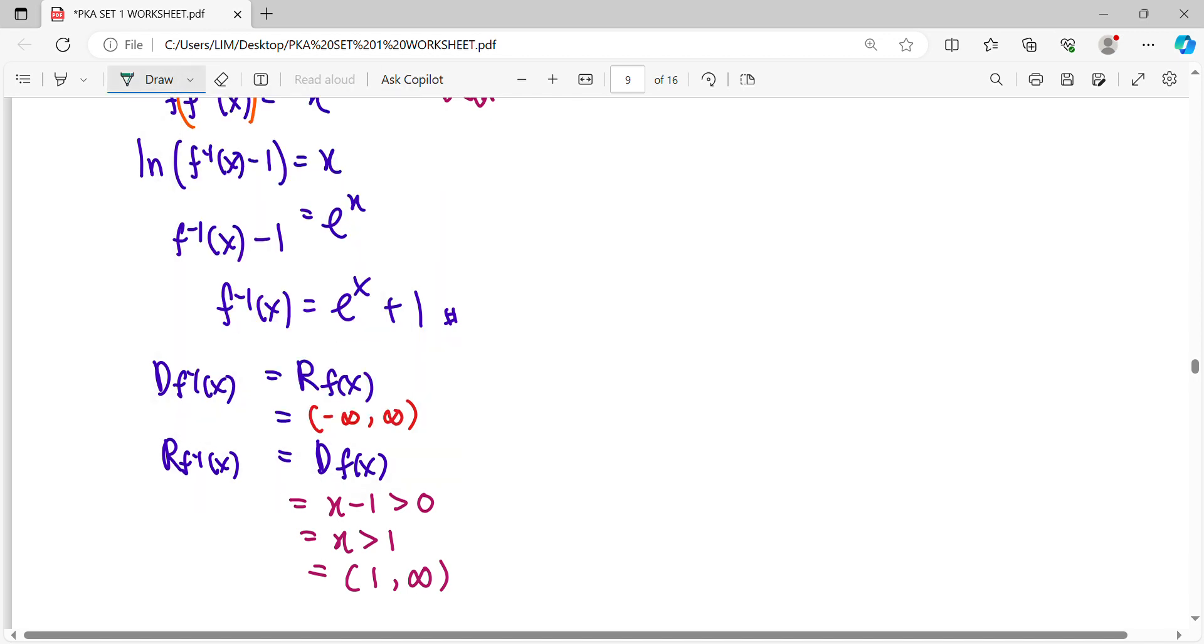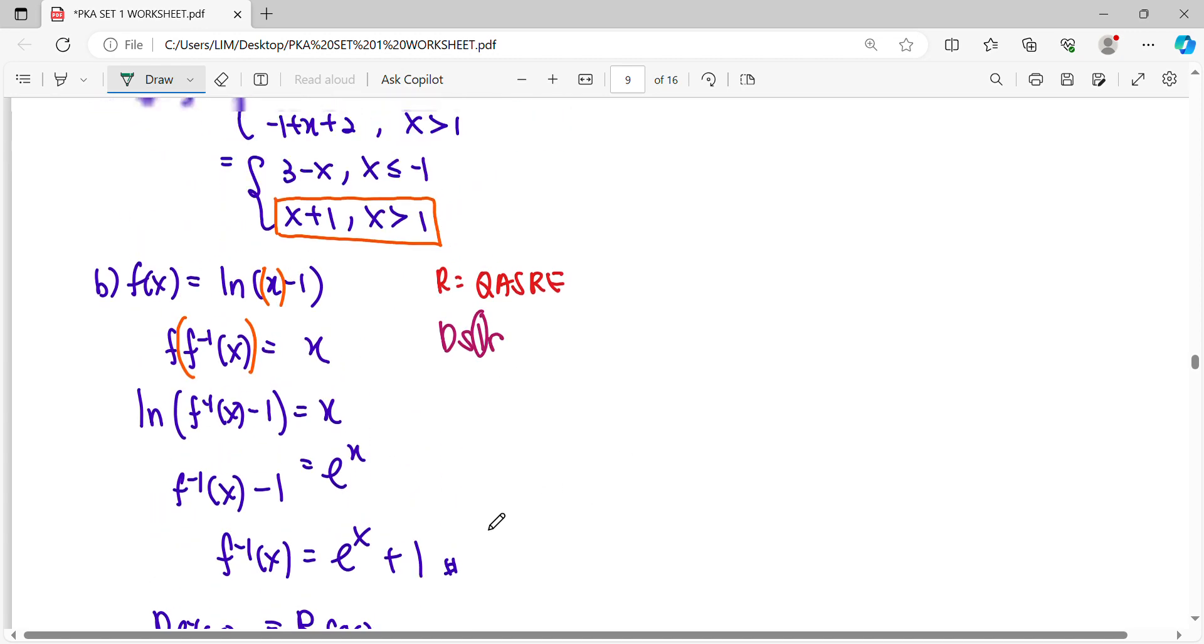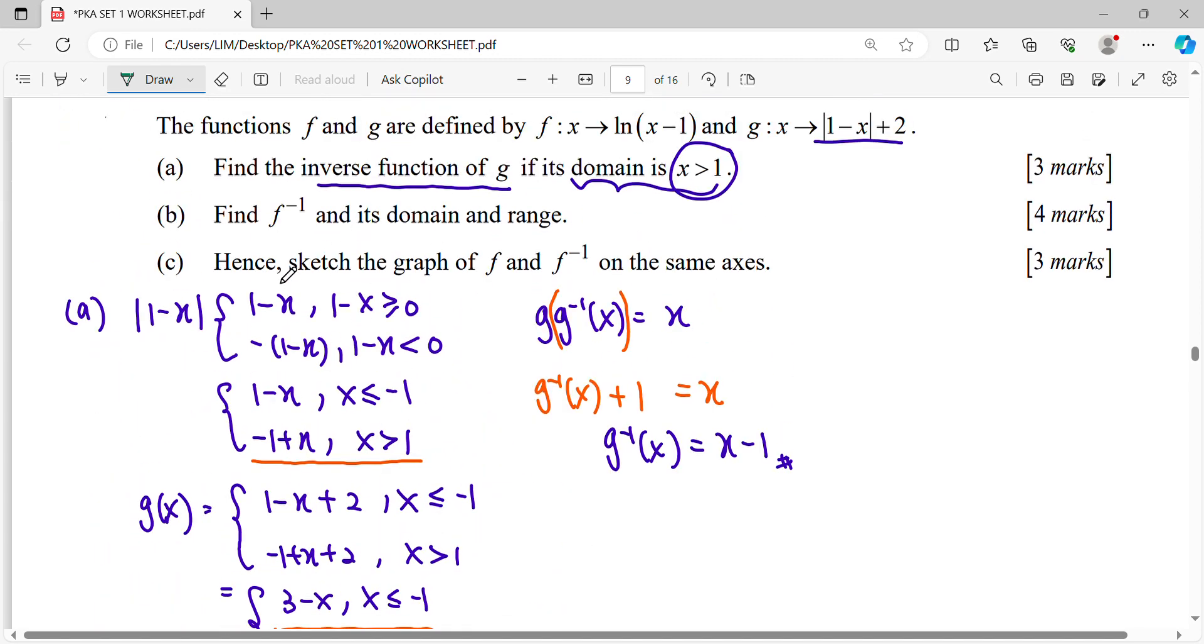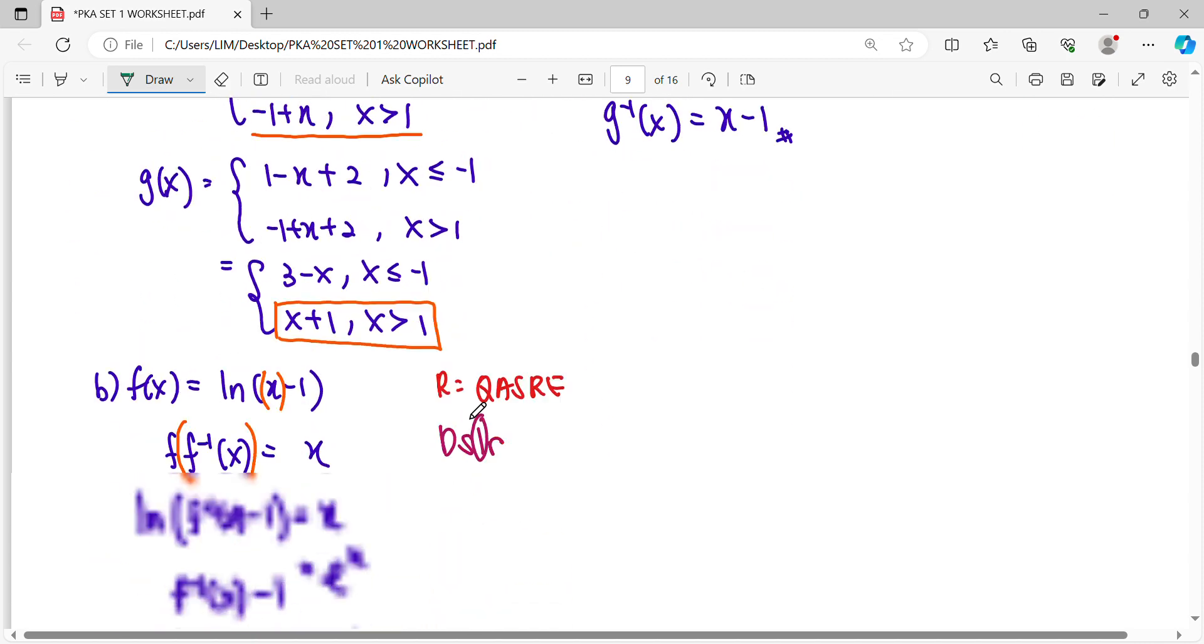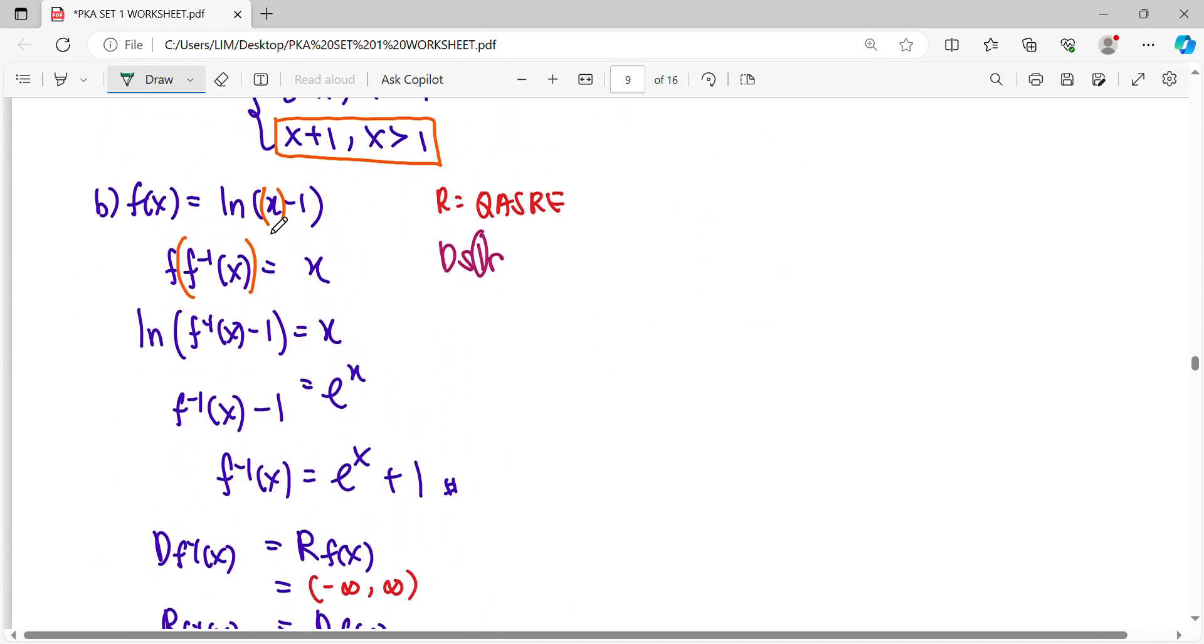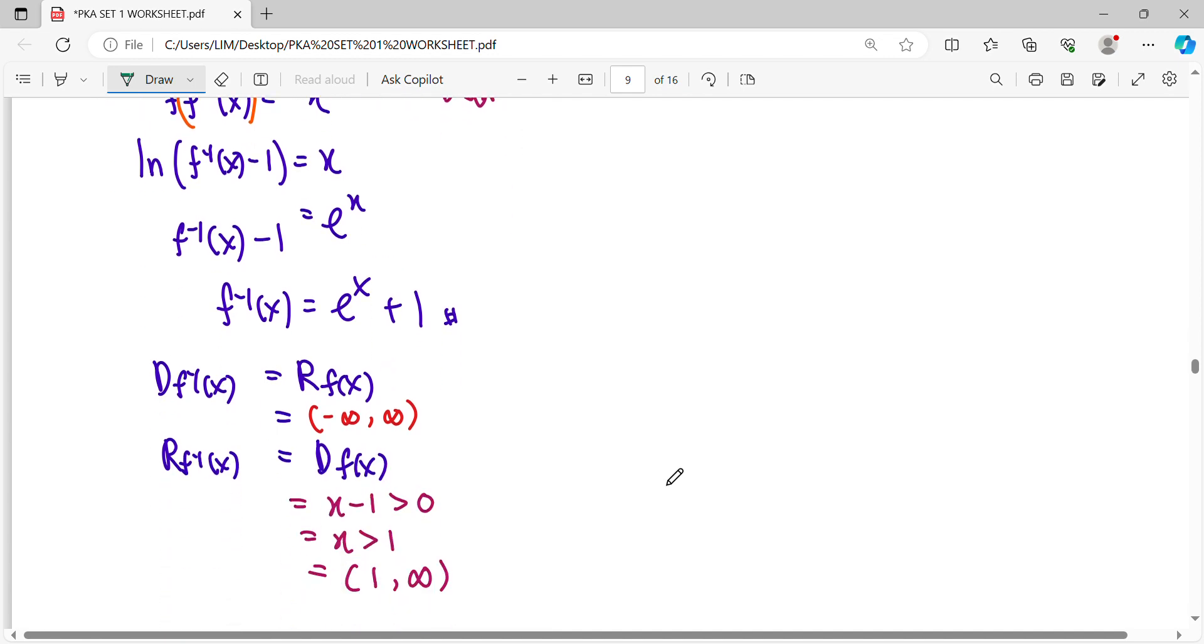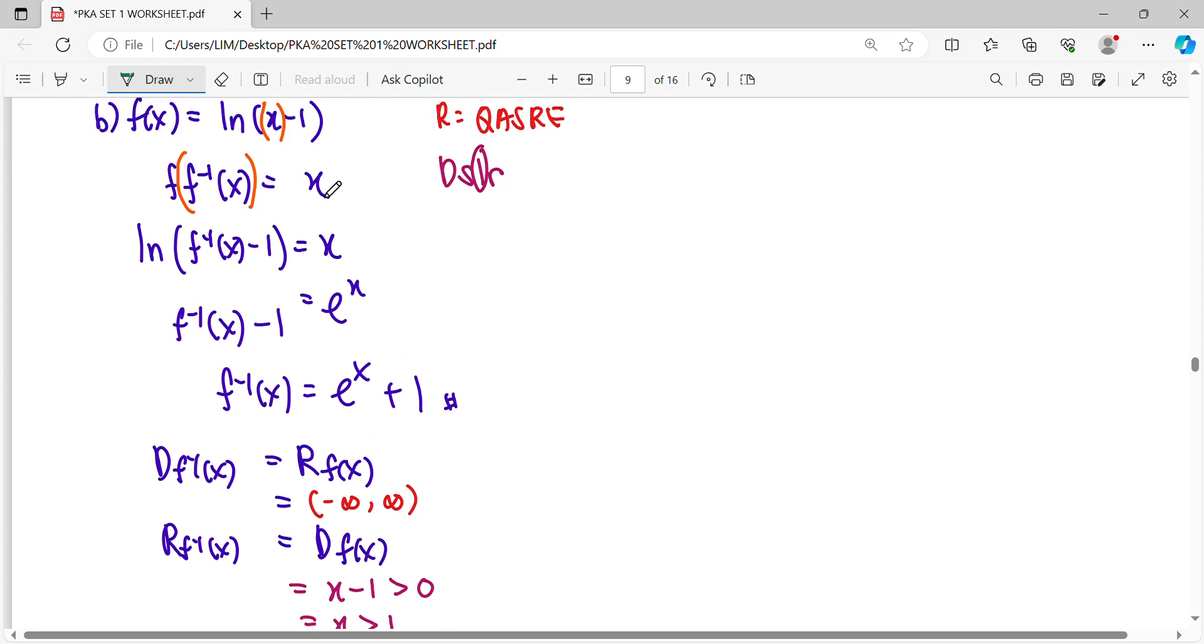So start from this part, we can continue for question c, where we need to sketch them on the same axis. So we were going to sketch function of log, then we'll reflect to get f inverse. So function of log, the shape of the function of log. It might be this side, it might be terbalik.